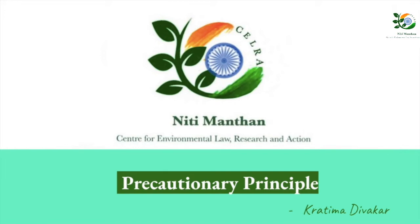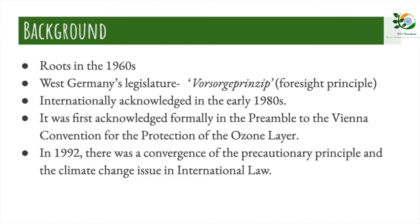To start with the background of the precautionary principle, it basically has its roots in the late 1960s. In the mid-1970s, West Germany's legislature enacted a national environmental policy which provided for a precautionary approach to environmental protection. The policy was termed as the Vorsauge principle, which literally meant the foresight principle. The precautionary principle is thus considered to be the most important principle of German environmental policy.